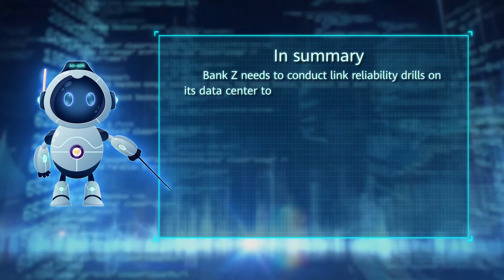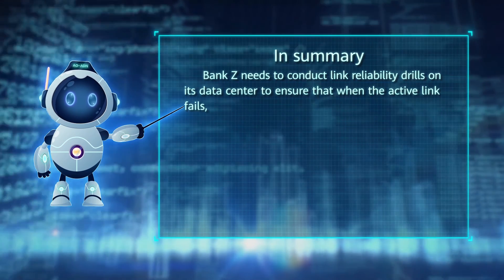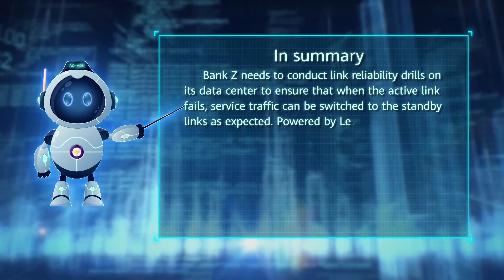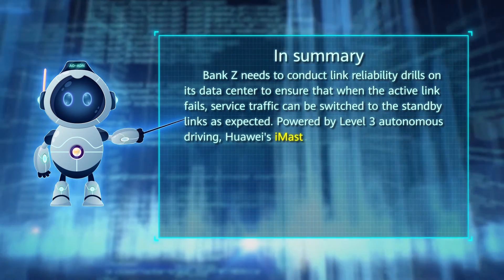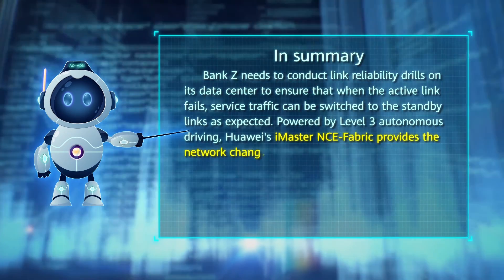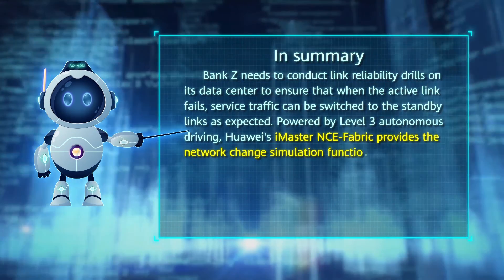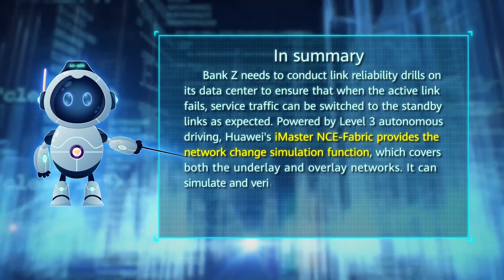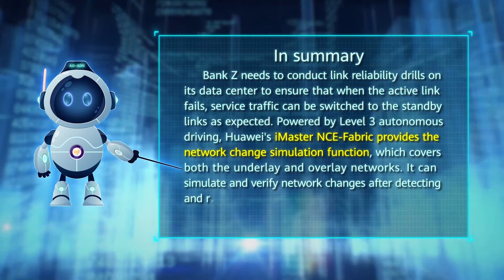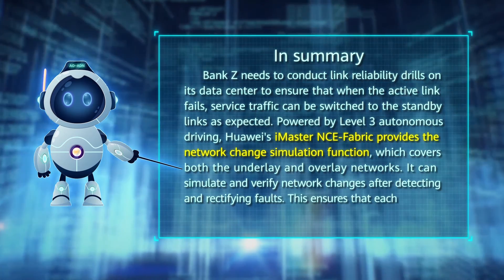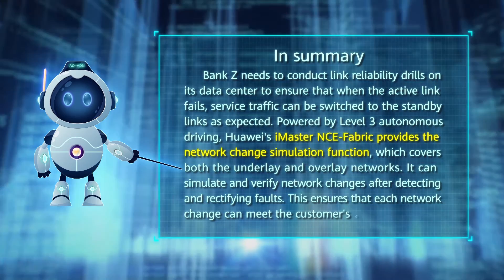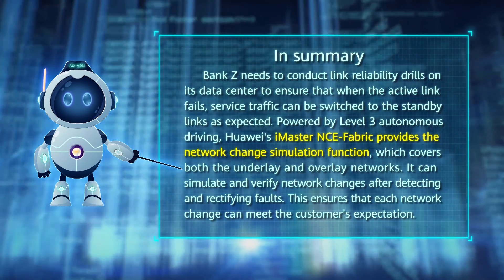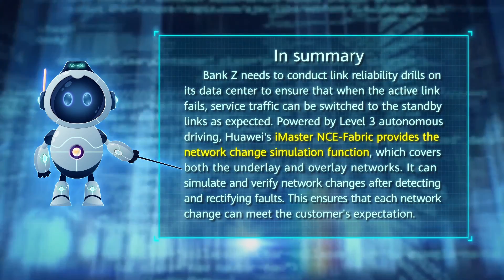In summary, Bank Z needs to conduct link reliability drills on its data center to ensure that when the active link fails, service traffic can be switched to the standby links as expected. Powered by Level 3 Autonomous Driving, Huawei's iMaster NCE Fabric provides the network change simulation function, which covers both the underlay and overlay networks. It can simulate and verify network changes after detecting and rectifying faults, ensuring that each network change can meet the customer's expectation.